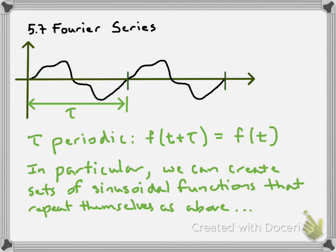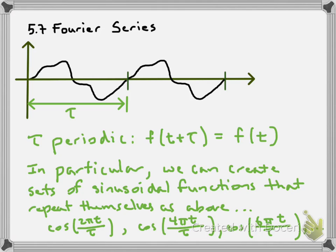We can take sinusoidal functions that are tau periodic and create sets of sinusoidal functions — something like cosine(2πt/τ), cosine(4πt/τ), cosine(6πt/τ). All of these functions are tau periodic. The amazing thing is I can combine them to create almost any arbitrary function, which is essentially what Fourier series are.